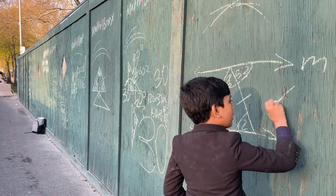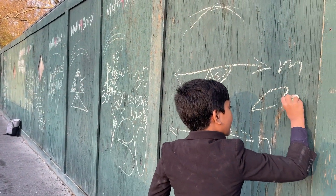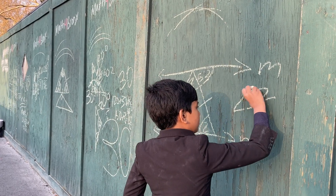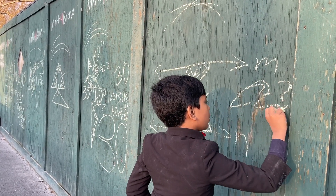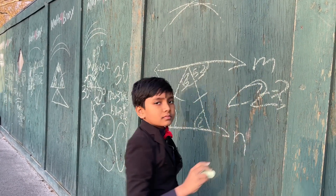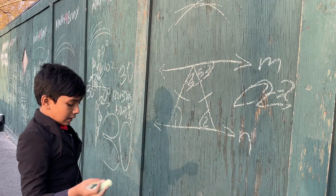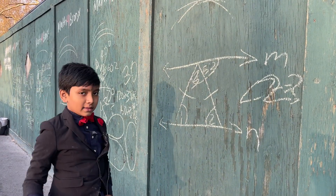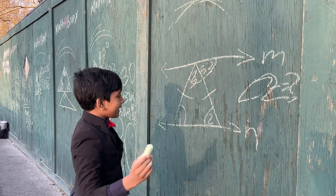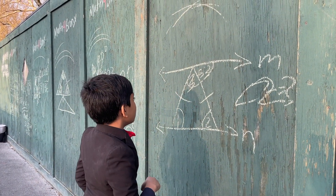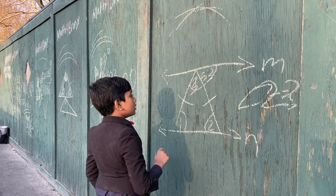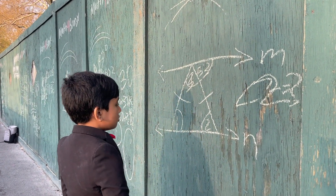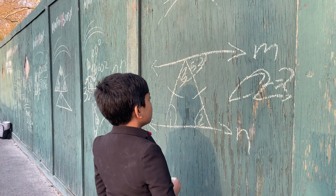So, what is the measure of angle two? Well, that's actually pretty easy to calculate. This is 53, this is three, so let's see.